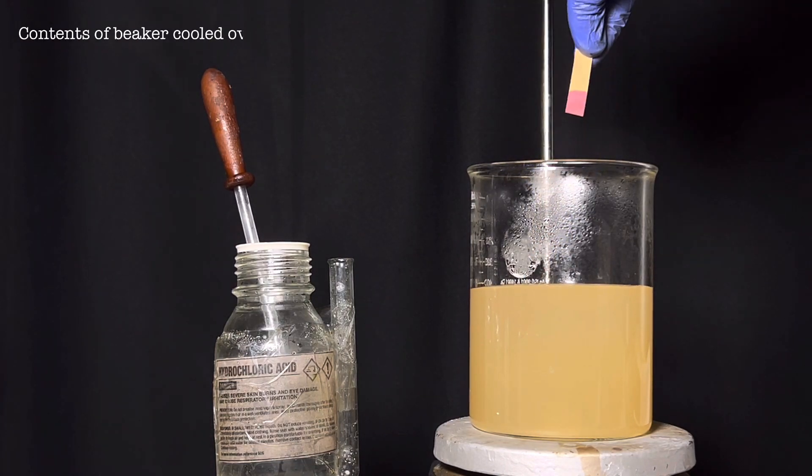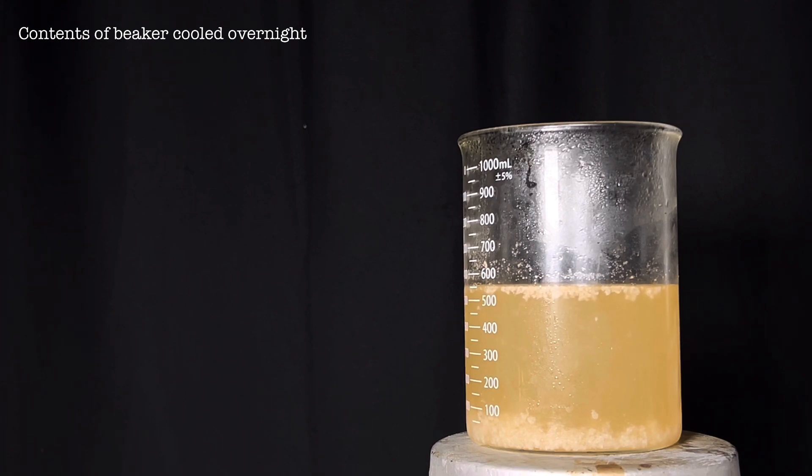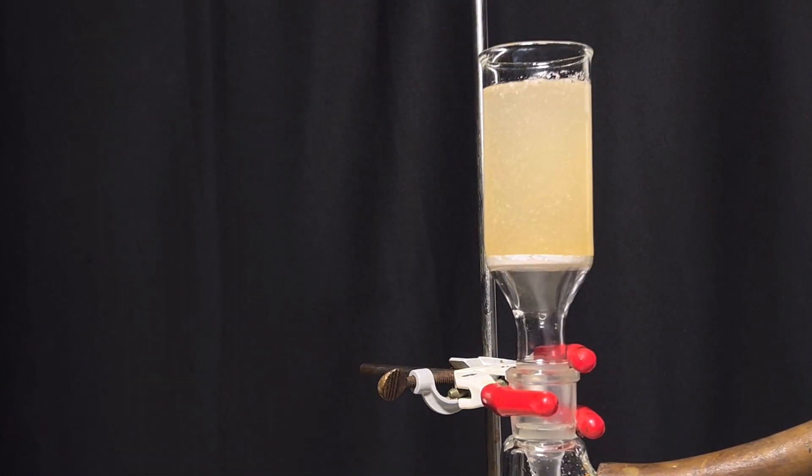The beaker was then chilled in the fridge overnight. Next day we have a lot of white fluffy precipitate and this is the crude cinnamic acid. It was then vacuum filtered to collect the crude product.